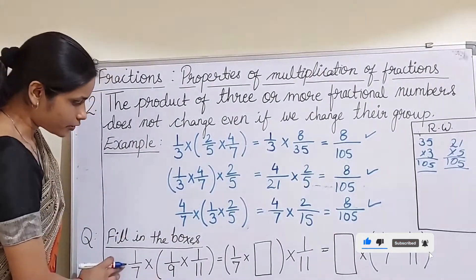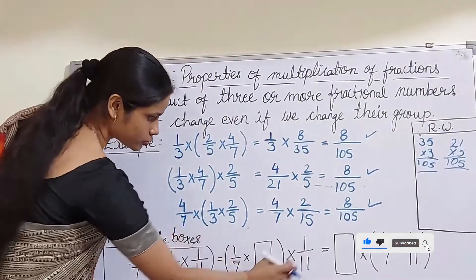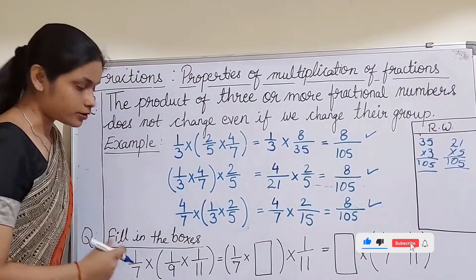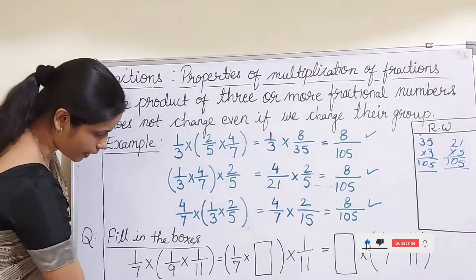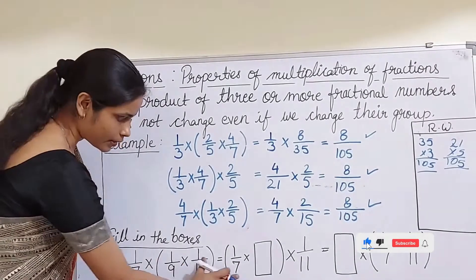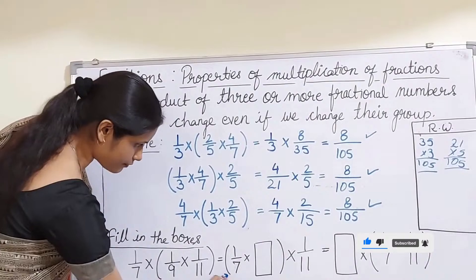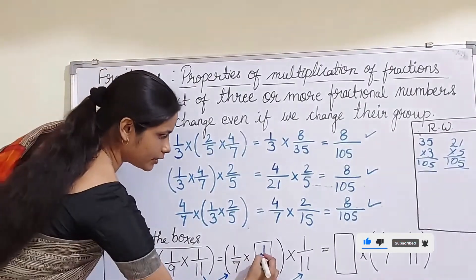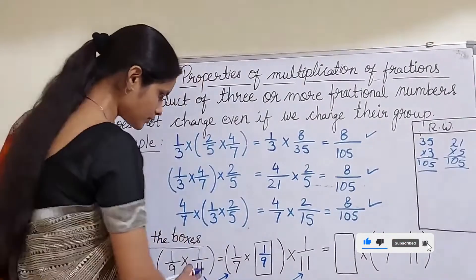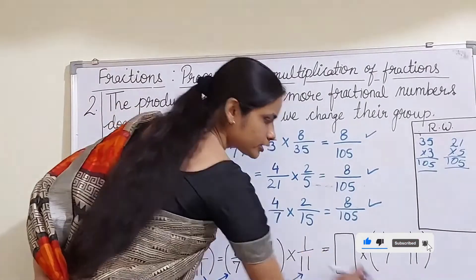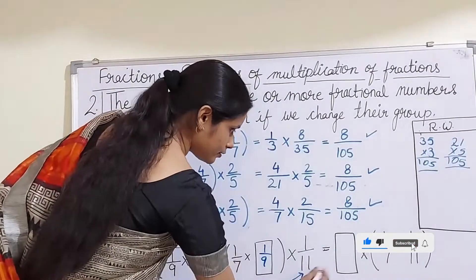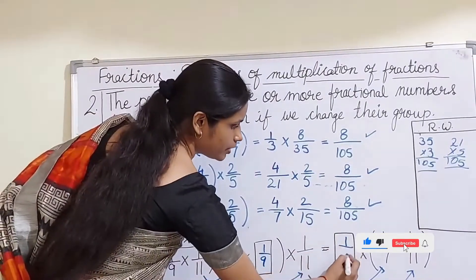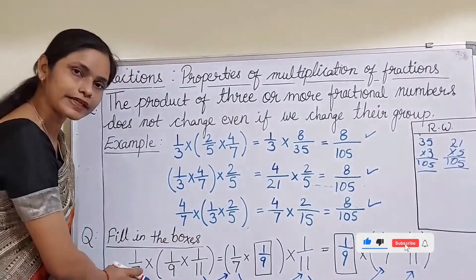Now let us apply the second property to a question. We have three parts: 1/7 × (1/9 × 1/11) = (1/7 × ?) × 1/11 = (? × 1/7) × 1/11. All three parts should be equal. In the second part, 1/7 and 1/11 are already there, so the missing number is 1/9. In the third part, 1/11 and 1/7 are present, so the missing number is again 1/9. Using the second property we can solve questions like this.